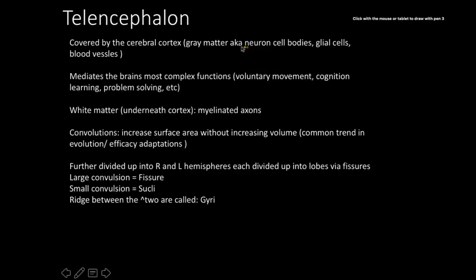The brain is covered by the cerebral cortex, which consists of gray matter — and whenever you see gray matter, think neuron cell bodies, as well as some glial cells and blood vessels. This mediates the brain's most complex functions and is really what separates us from most other animals on the planet.